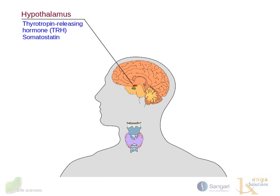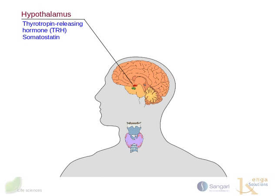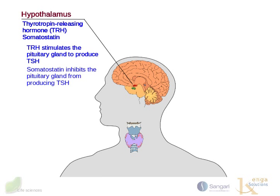Let's start with the hypothalamus. The hypothalamus detects low circulating levels of thyroid hormone, T3 and T4, and responds by releasing thyrotropin-releasing hormone, TRH. TRH stimulates the pituitary gland to produce TSH, the thyroid-stimulating hormone. Somatostatin, on the other hand, inhibits the pituitary gland from producing TSH.